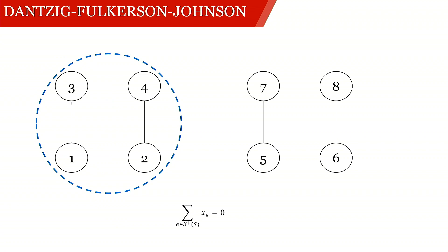However, if we look into this subset of nodes, then the number of arcs that leaves the subset is 0. There's not a single arc active that connects the set 1, 2, 3, 4 with the set 5, 6, 7 and 8. And this is why the subtour elimination constraint is now violated.